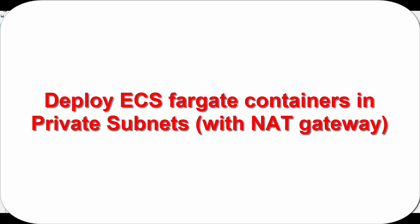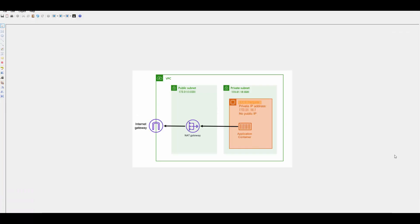Hello friends, welcome to this session. In today's session we will see how you can deploy your ECS Fargate containers in private subnets. This is the setup which we will try to achieve today. We will have a VPC with a public subnet and private subnet, deploy an application container in ECS Fargate, and for communication we will also create a NAT gateway.